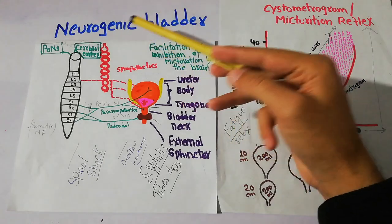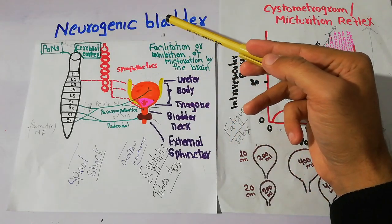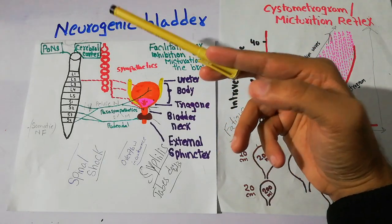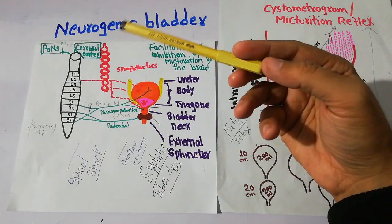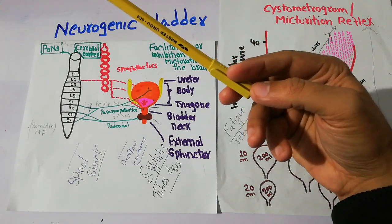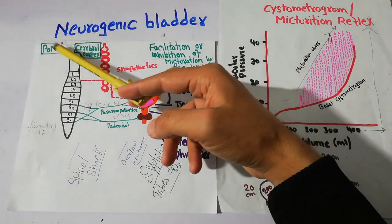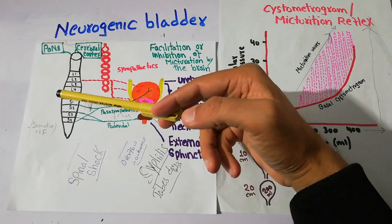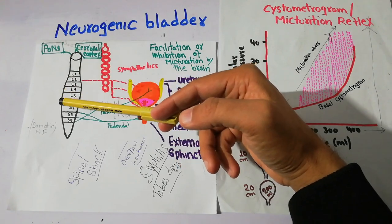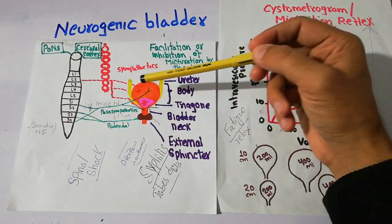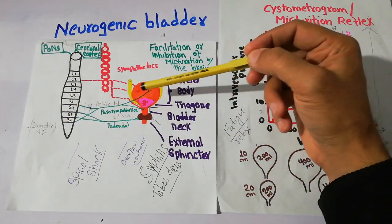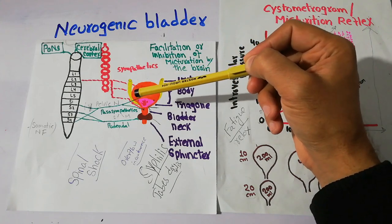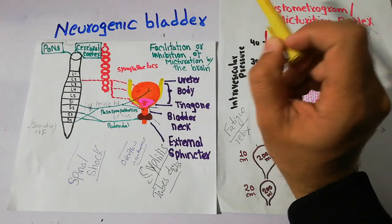Today we are going to talk about neurogenic bladder, which is also called uninhibited neurogenic bladder. It is basically caused by lack of inhibitory signals from the brain. Inhibitory signals coming from the brain toward the spinal cord are disturbed, due to which the bladder is so excitable that even a small amount of urine in the bladder can cause the micturition reflex.